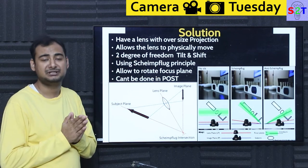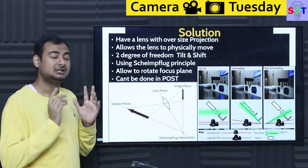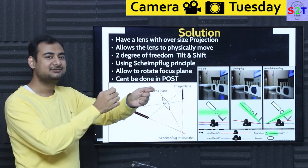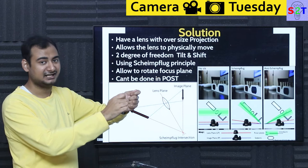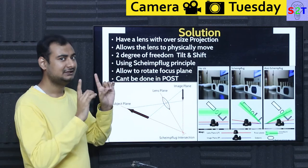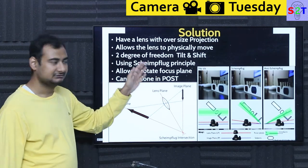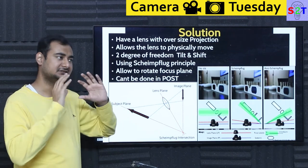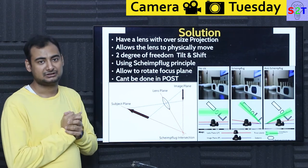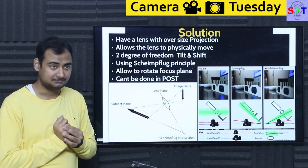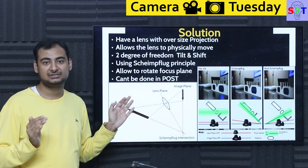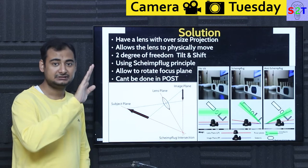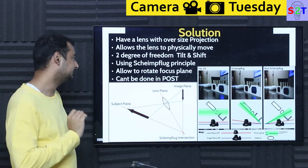Then the lens must physically move. If you are familiar with the old bellows-style cameras — where cameras just have a soft, squishy accordion thing — that was the whole idea: you can perfectly align things. This is one of those technologies we used to have that we no longer have. So in modern systems, they require a very intricate system of slides and locking mechanisms to achieve this effect properly. There must be two degrees of freedom — that's in the name: tilt and shift. It must allow you to rotate it and physically shift it.